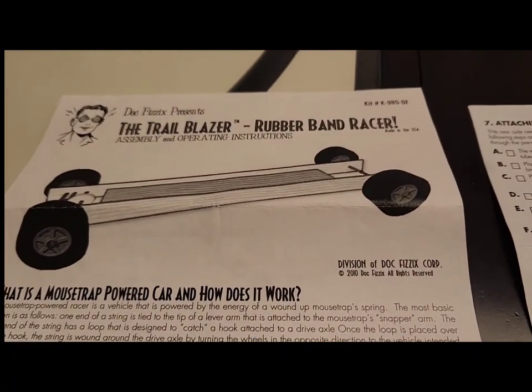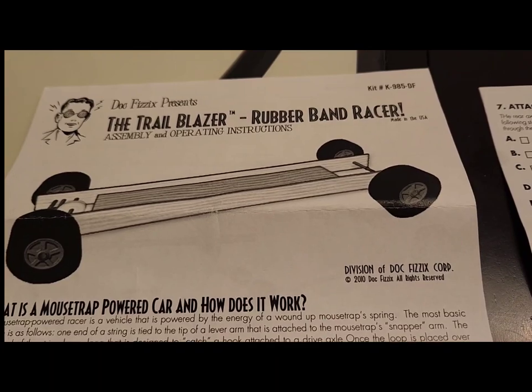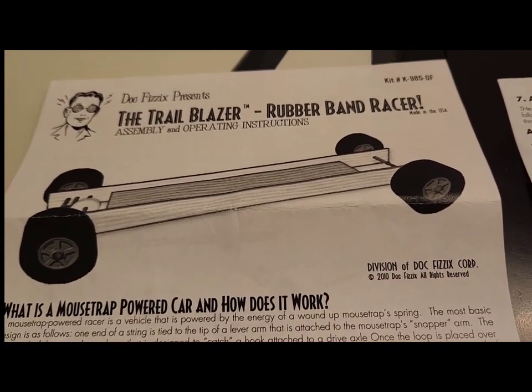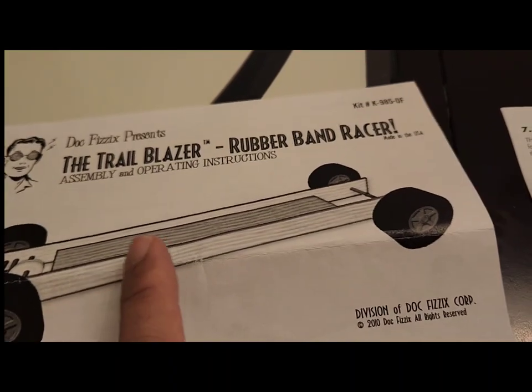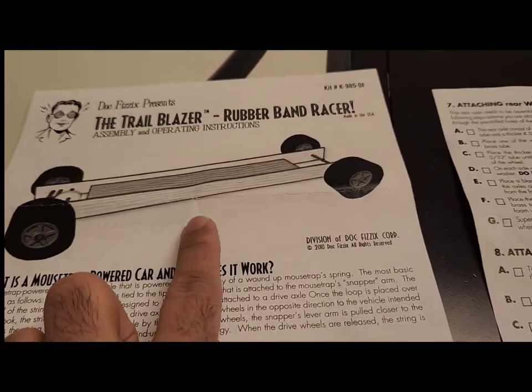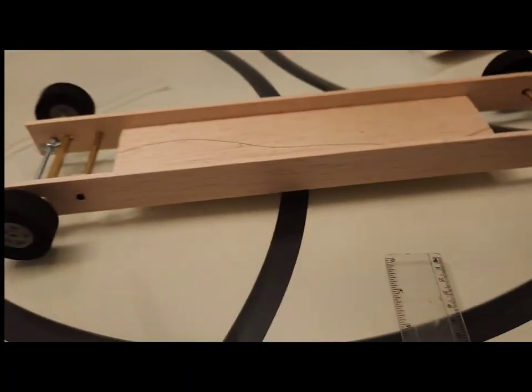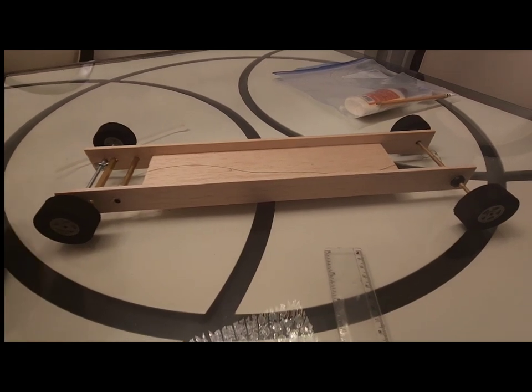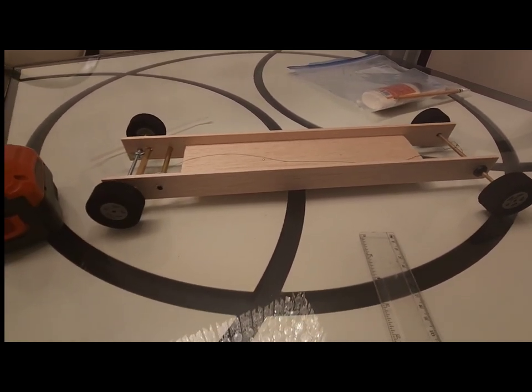Hi, this is a quick video to help understand how to build or construct a wheeled vehicle. On the instructions it says the Trailblazer or rubber band racer. This is how it looks and we have constructed it so far. I can quickly go over the steps that we completed so far - we are kind of midway here.